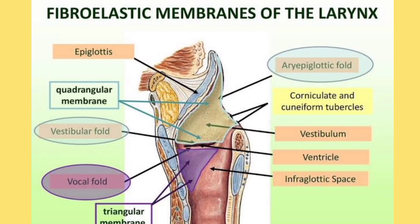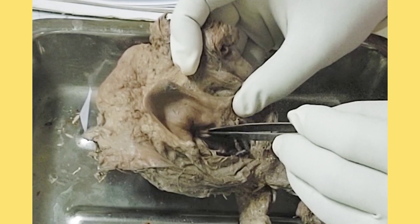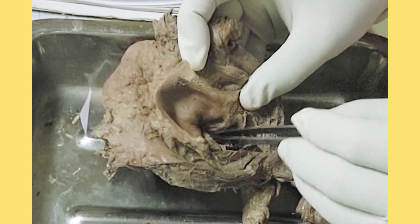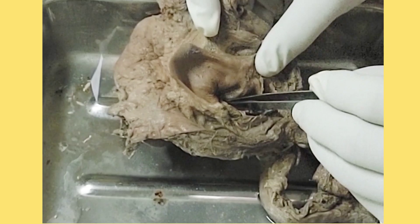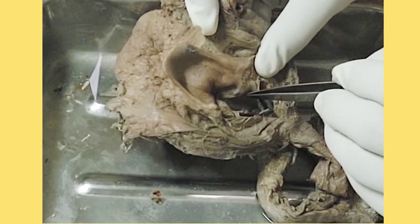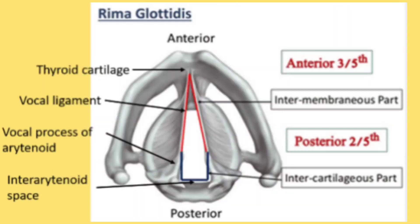Overlying this vocal ligament you will find the mucous fold which is called the vocal fold. Between these two vocal folds on both sides, the space or gap is called the rima glottidis, which is the narrowest anteroposterior slit of the laryngeal cavity. In males it is about 23 mm in length and in females about 17 mm. It has two parts: anteriorly the intermembranous part, and posteriorly the intercartilaginous part, because posteriorly it is formed by the vocal process of the arytenoid cartilage. It is bounded anteriorly by the thyroid angle, on each side by the vocal ligament and vocal process, and posteriorly by the interarytenoid fold of mucous membrane.